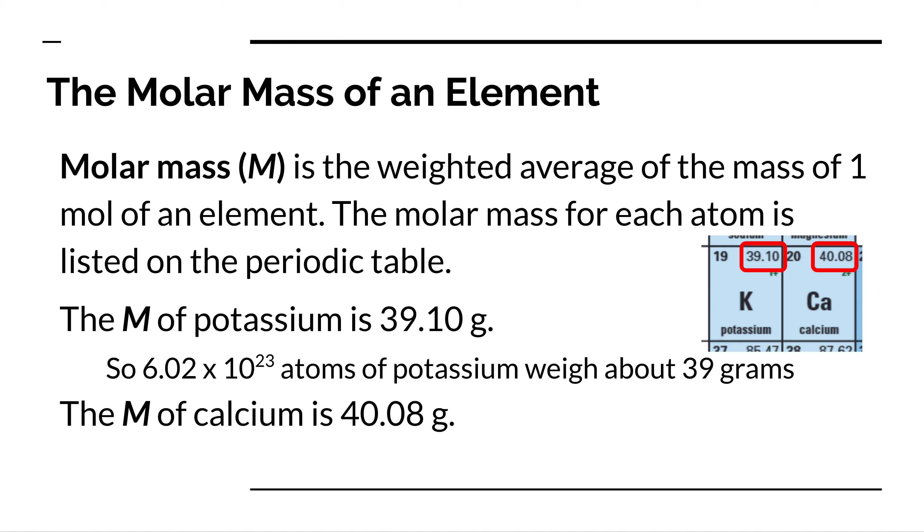So 6.02 times 10 to the 23 atoms of potassium, on average weighs about 39 grams, or has a mass of 39 grams.